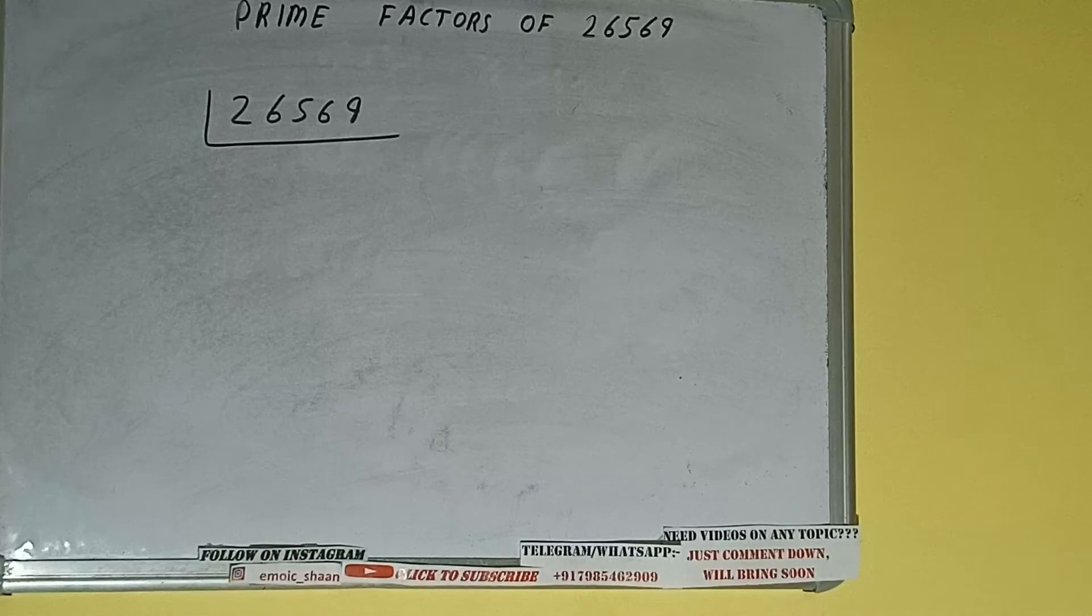...is what are prime numbers. So prime numbers are numbers that are divisible by one and the number itself, like two, three, five, seven, and so on.